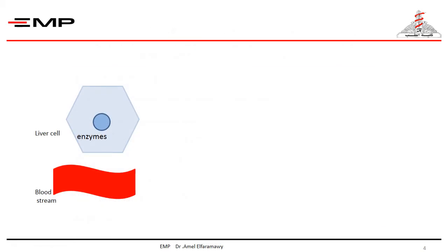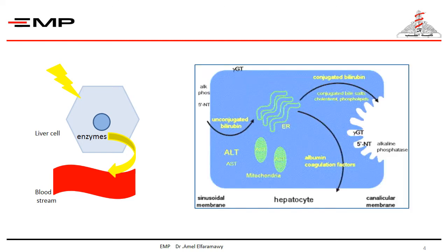When the hepatocytes are exposed to injury due to any cause, there will be tissue damage with the release of liver enzymes into the circulation. Four enzymes are of clinical importance. The ALT — alanine transaminase — presents mainly in the hepatocyte cytoplasm and in very low concentration in the muscles. AST — aspartate transaminase — is present in the hepatocyte cytoplasm and mitochondria, and also present in many other tissues including skeletal and cardiac muscles and red blood cells.